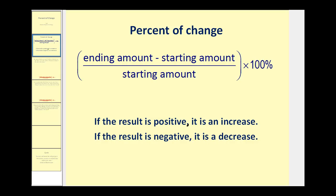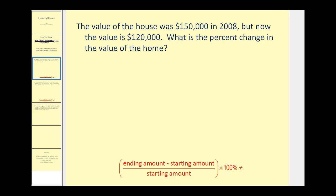Let's take a look at a couple of examples. The value of a house was $150,000 in 2008, but now the value is $120,000. What is the percent change in the value of the home? The ending amount is $120,000 and the starting amount was $150,000. We're going to take this difference and divide by the starting amount, which was $150,000.